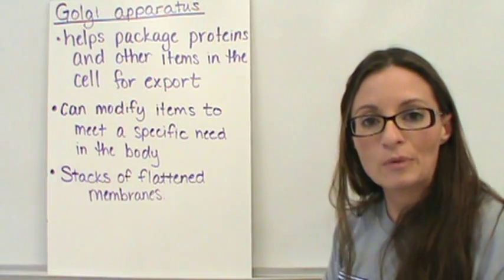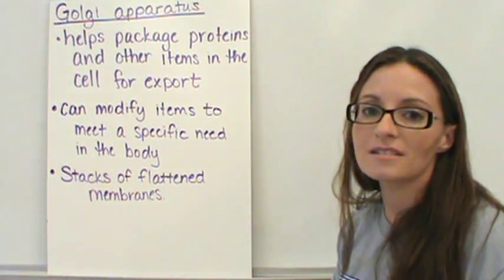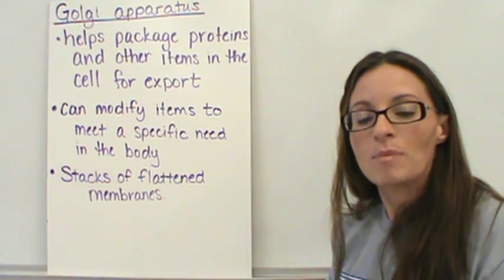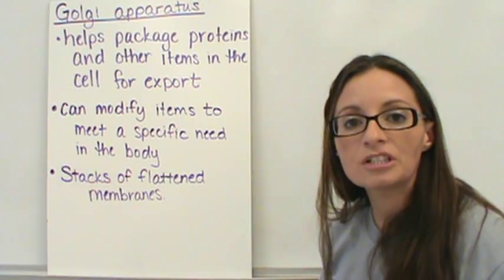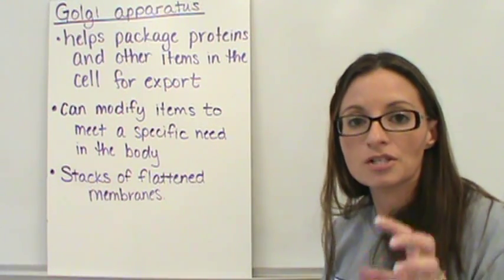And then if you look at the Golgi apparatus within a picture of the cell, what you are going to see is these flat membranes. It is going to look much like the endoplasmic reticulum, only you are not going to see these maze-like structures that connect them.